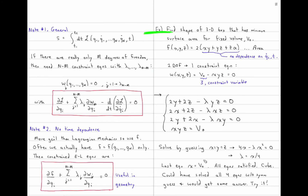Let's do an example. Suppose we want to find the shape of a 3D box that has minimum surface area but a fixed volume V0. The objective function F is the total surface area: twice xy plus yz plus zx. We have three variables — x, y, z — but only two degrees of freedom because of the fixed-volume constraint. So we need one constraint equation: W of x, y, z equals V0 minus xyz equals zero.